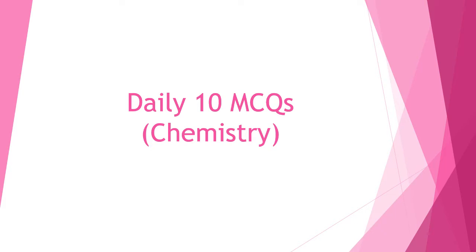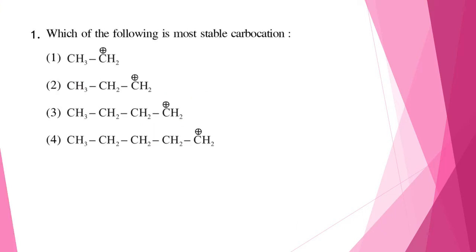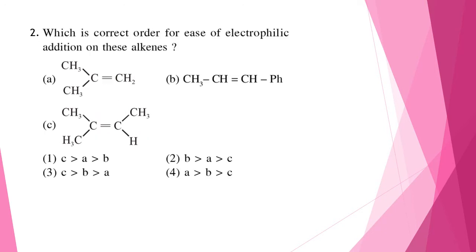Question one: which of the following is the more stable carbocation? In option one you can see that there will be the most hyperconjugation, therefore option one will be the most stable because of the greater number of hyperconjugations possible.